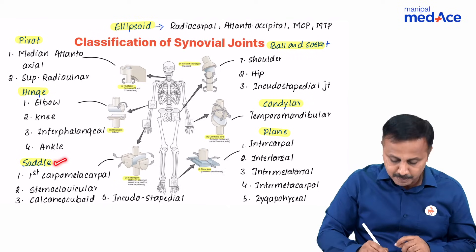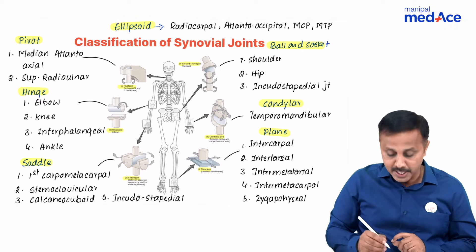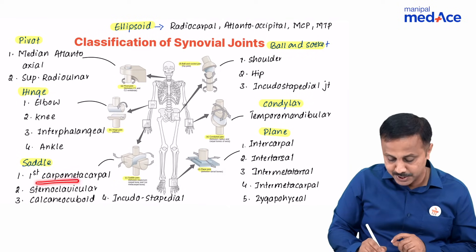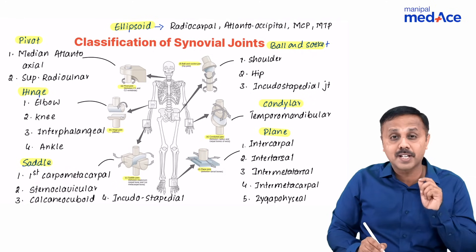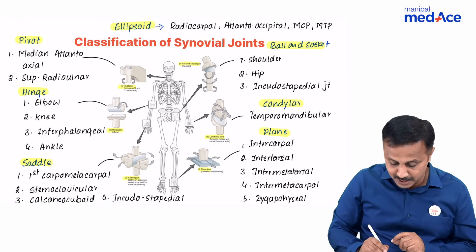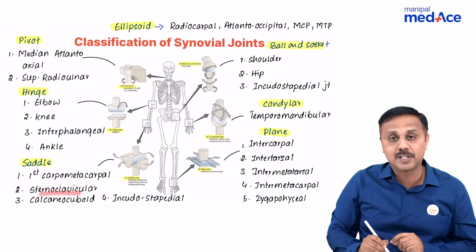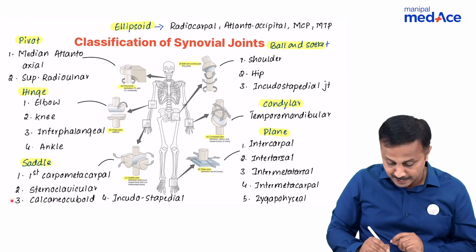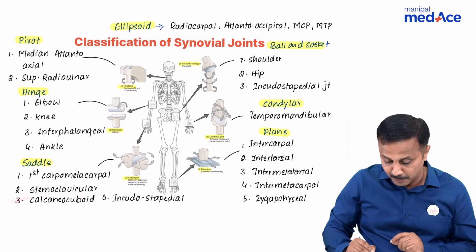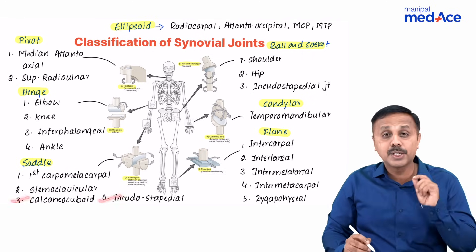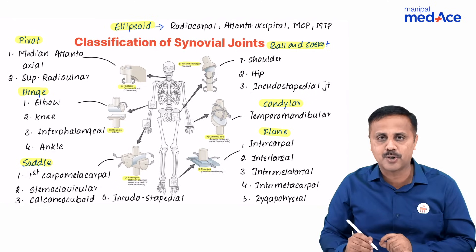When we talk about the saddle joint, the examples include the first carpometacarpal, sternoclavicular, then we have the calcaneocuboid and incudostapedial joint.